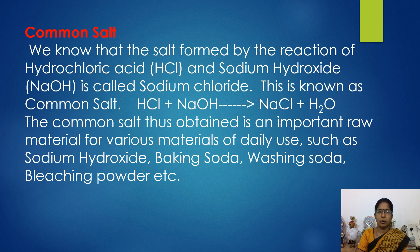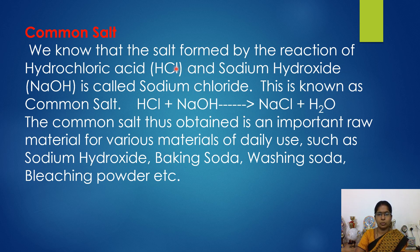The chemical name of common salt is sodium chloride and its chemical formula is NaCl. You have already learned about the preparation of sodium chloride. Let's recap. You know that sodium chloride is prepared by the reaction of hydrochloric acid HCl and sodium hydroxide NaOH, giving rise to NaCl plus H2O. The salt obtained is known as common salt since it is used widely.